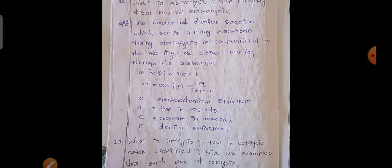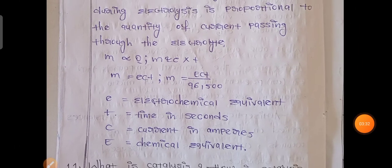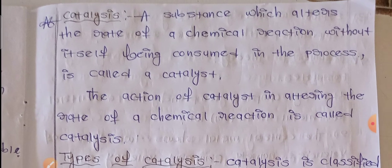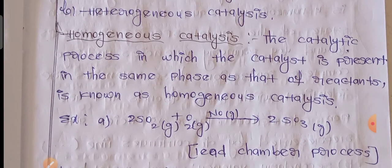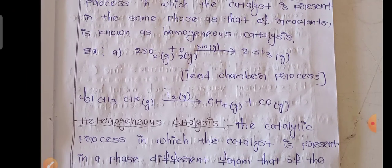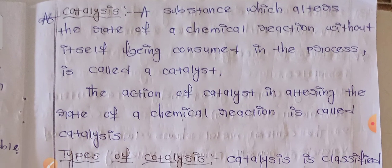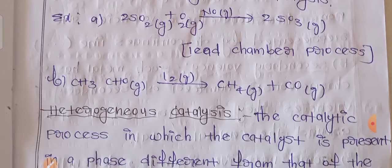What is catalysis? How is catalysis classified? Give examples for each type. Types of catalysis: homogeneous catalysis and heterogeneous catalysis.